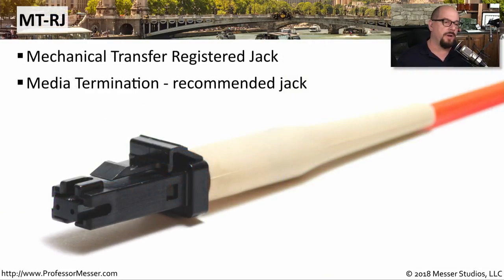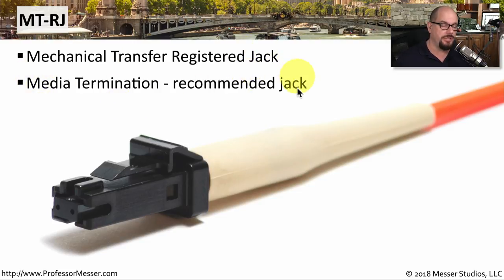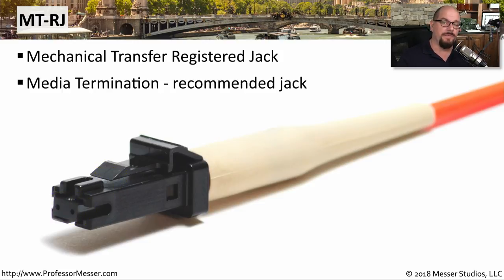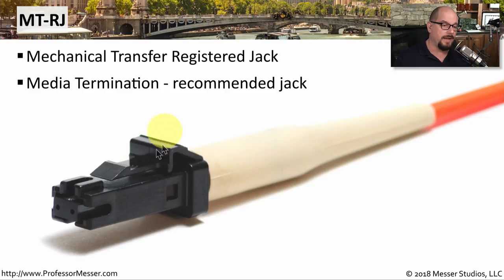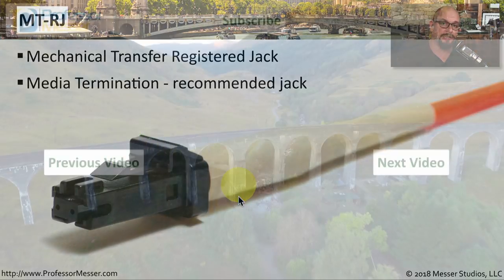The last type of fiber connector we'll look at is the MTRJ connector. This stands for mechanical transfer registered jack, though some say it refers to media termination recommended jack. In either case, it's the smallest connector we've seen so far. You can see we're able to fit the transmit and receive fibers into a form factor that is about the same size as an RJ45 copper connector.